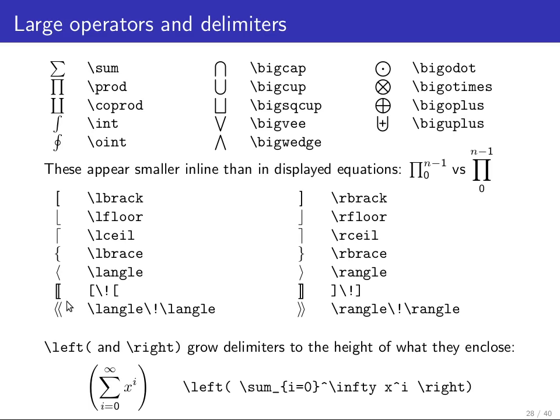You have the ability to create some new delimiters, for example, double square brackets or double angle brackets by putting a little negative space backslash exclamation mark between them. Many of these delimiters can also be grown.